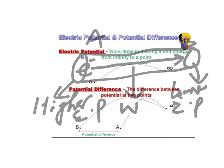Electric potential is defined in terms of work done. The work done to move the charge from one end to another is called electric potential difference. Electric potential is defined as the work that has to be done to move a charge from infinity to a particular point.